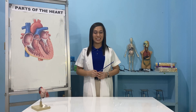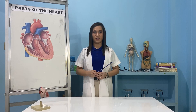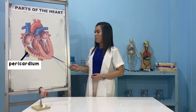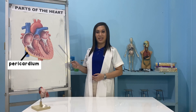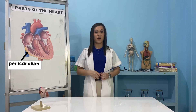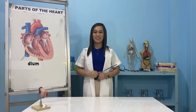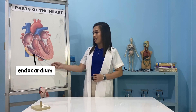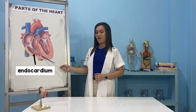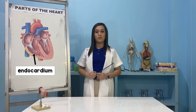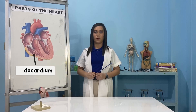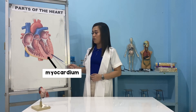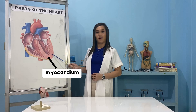The heart has three layers. First is the pericardium — it provides physical protection and stops the heart from overexpanding. Second, the endocardium — it is the lining inside the heart that ensures smooth blood flow. And last, the myocardium, or the muscle of the heart.